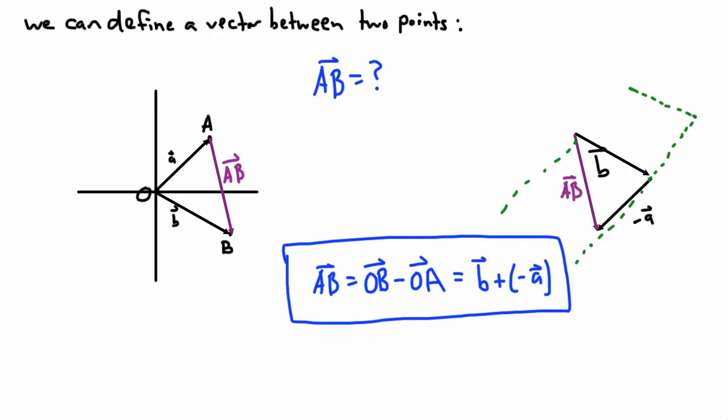I've just defined, maybe in a not so clear way, in a previous video, how I can define a vector between two points. If I've got point A in Cartesian coordinates and point B, I can define a vector that joins those two points, called vector AB, and it's the same thing as vector B plus negative A.